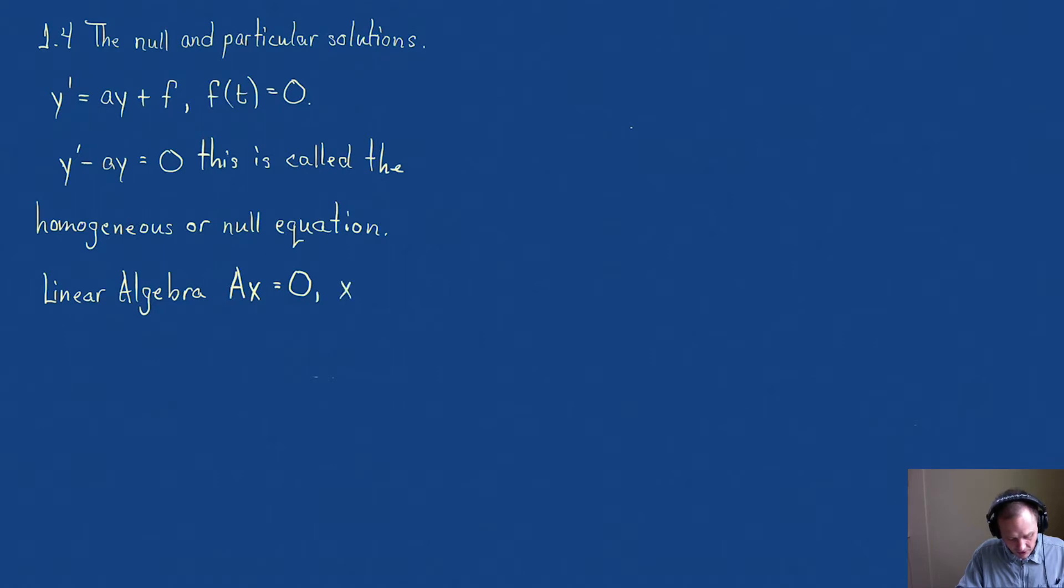For example in linear algebra, you solve this problem: A, some matrix, times some vector x equals the zero vector. This is also called the homogeneous or null equation. And you've probably solved a quadratic equation like ax² + bx + c = 0. Dealing with a zero on one side of the equation is actually quite common. Now we're just using some formal language.